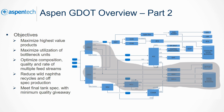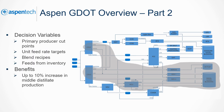GDOT also reduces wild naphtha recycles and off-spec production, and meets final tank specification with minimum quality giveaway. GDOT achieves these objectives by controlling cut points on the CDU, hydrocracker, FCC, and the coker. GDOT also controls the unit feed rate targets, blend recipes, and feeds from the inventory. A typical benefit of using GDOT in this capacity is a 10% increase in middle distillate production.